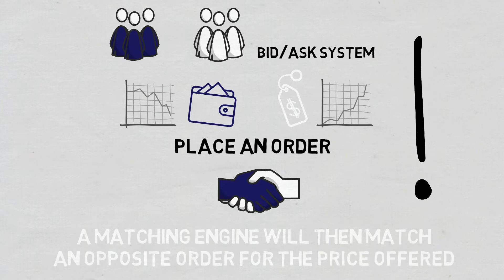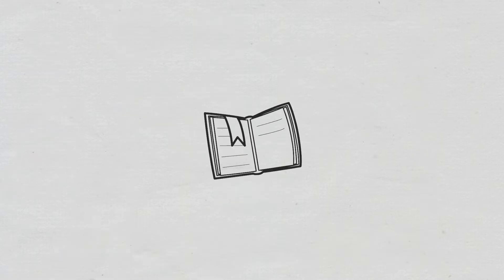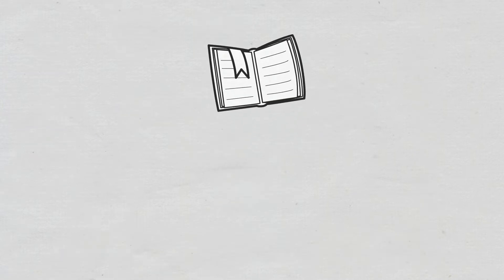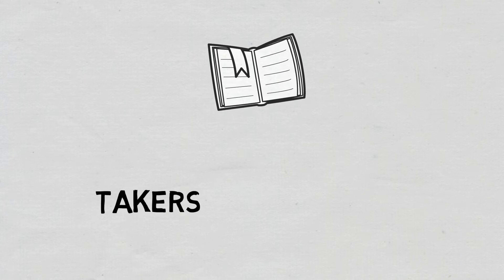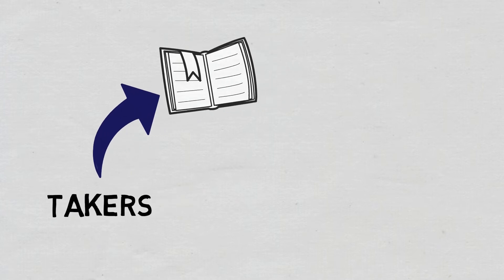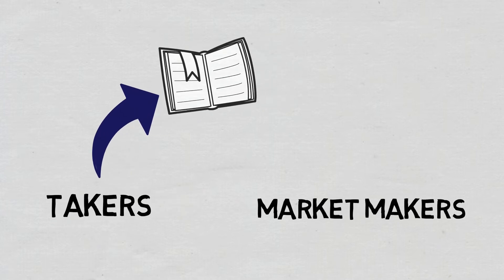In order book trading, there are usually two types of traders: takers, or the traders who take the bid or ask price that is already in the order book, and market makers, or the traders who place orders for prices that are not currently available in the order books.